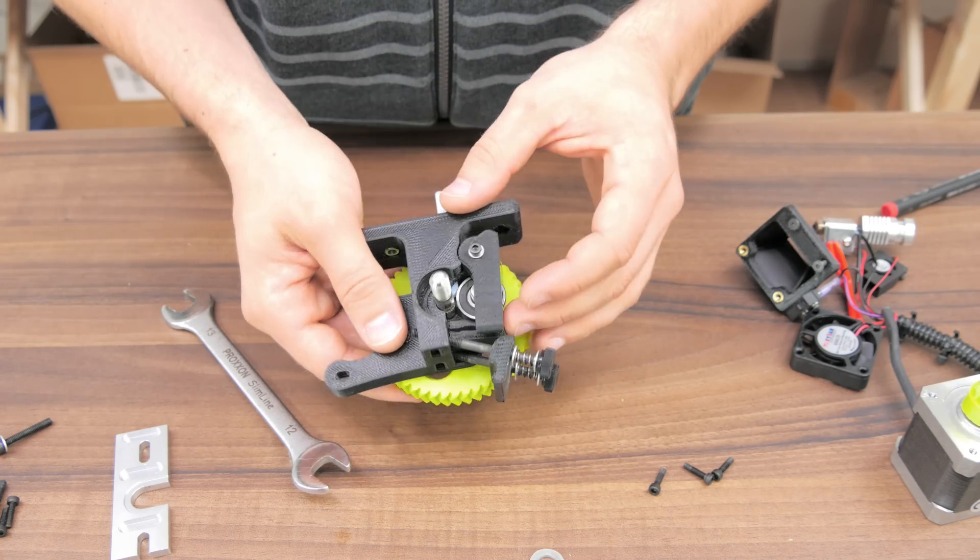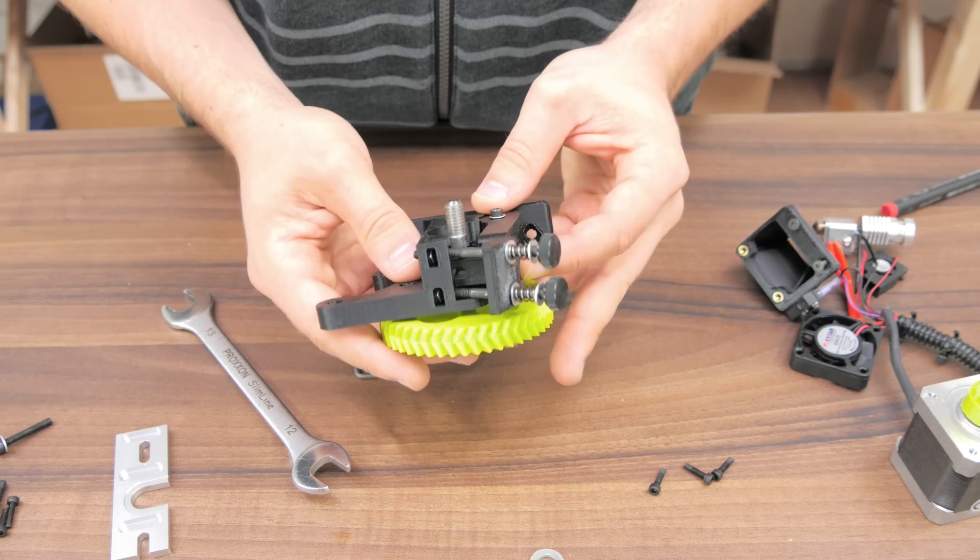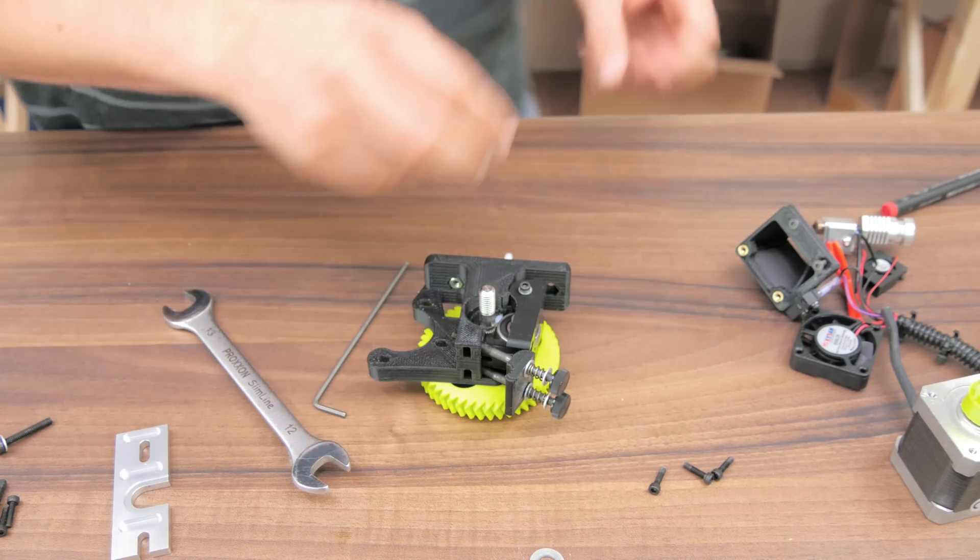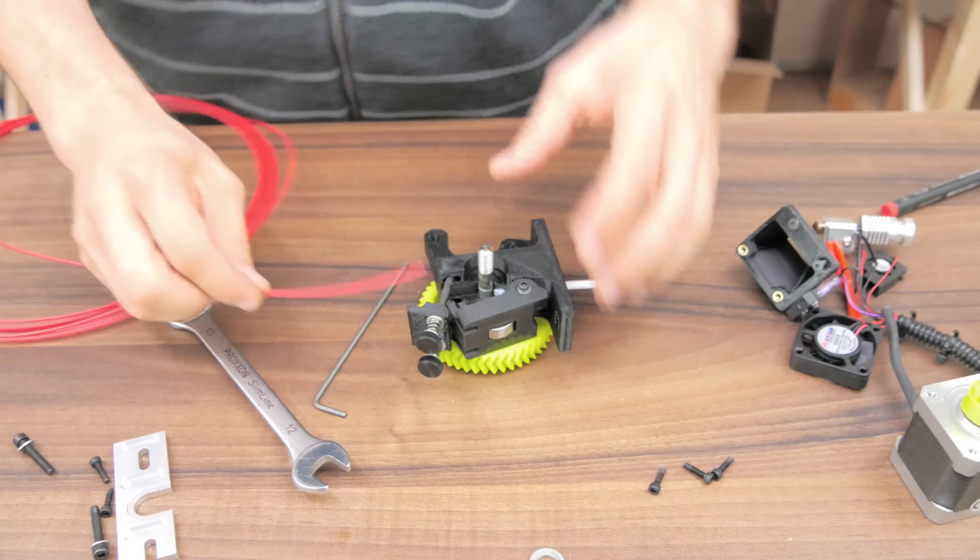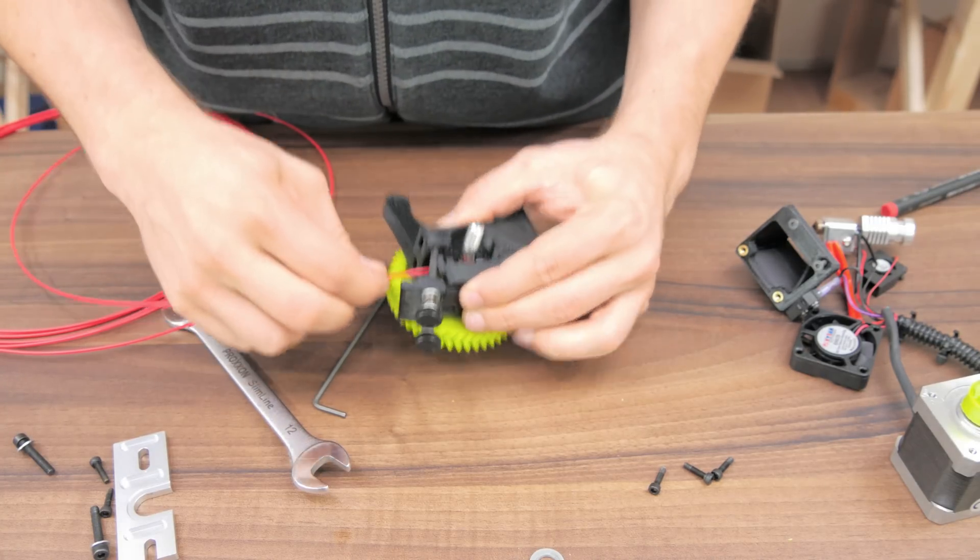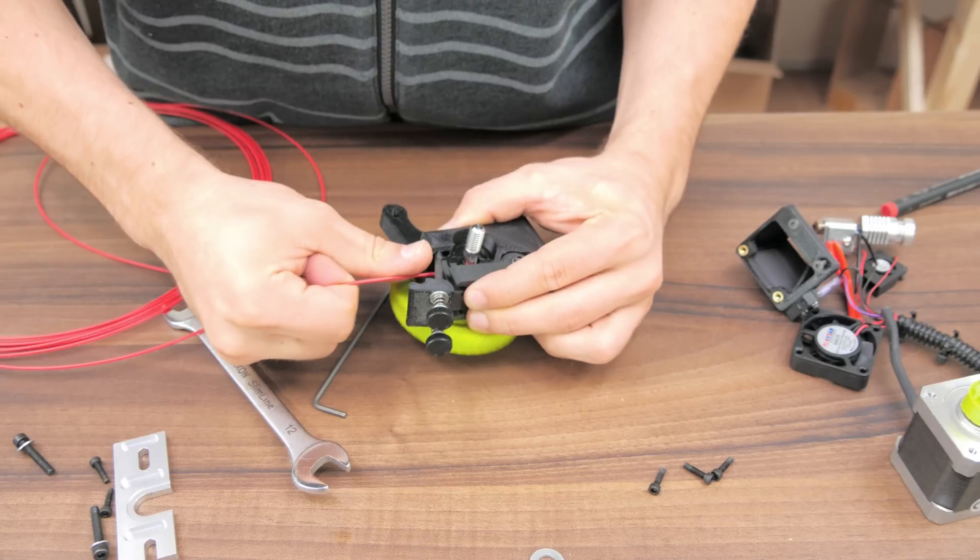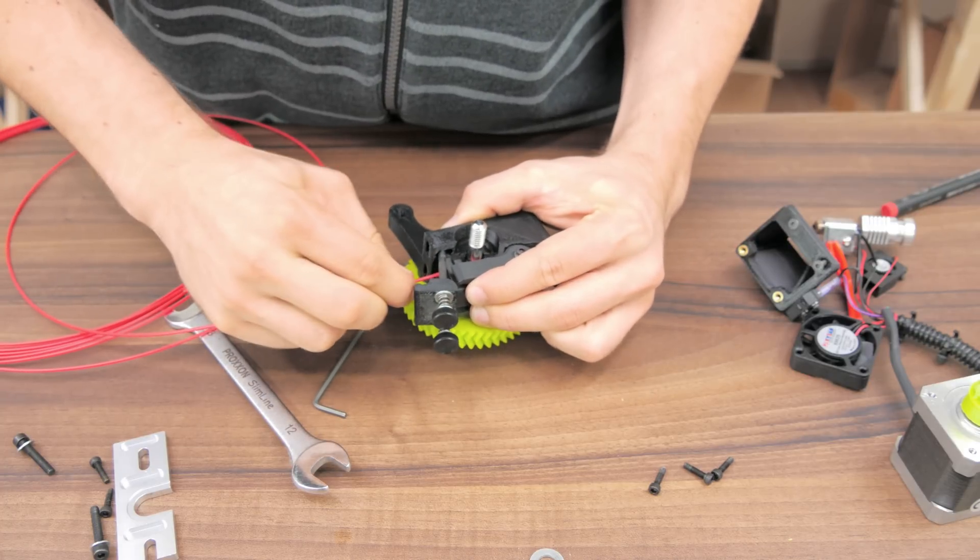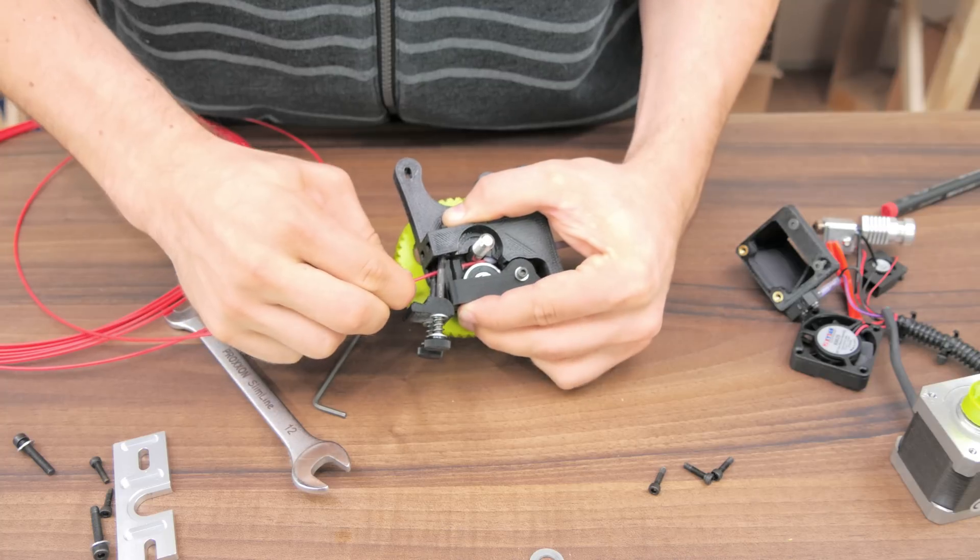One thing you can already check for here is that the idler lever doesn't actually collide with the main extruder body. Go ahead, insert that filament, press it down with your fingers and see if it actually closes far enough to effectively press the filament against the hobb bolt.